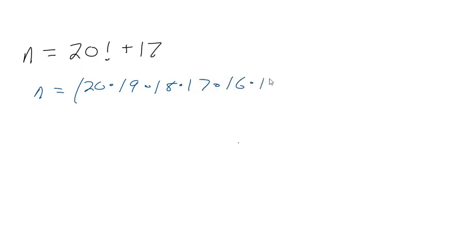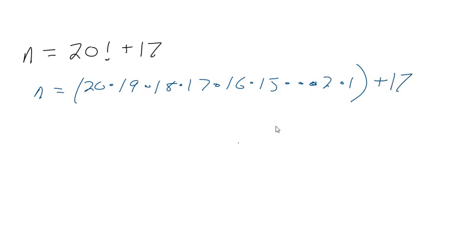16, 15, all the way down to 2 times 1. So that huge number plus 17. And we want to know: this humongous number is divisible by what without leaving a remainder? The possibilities are 15, 17, and 19.